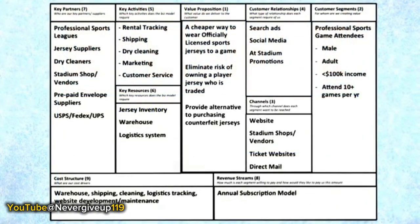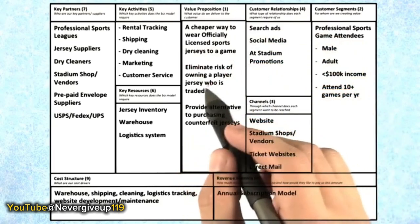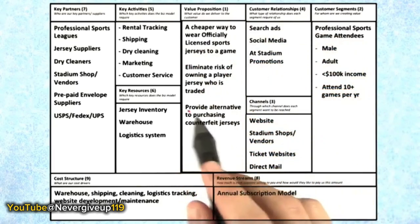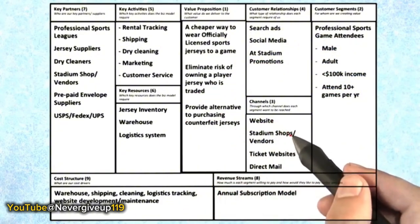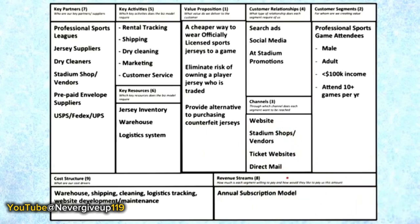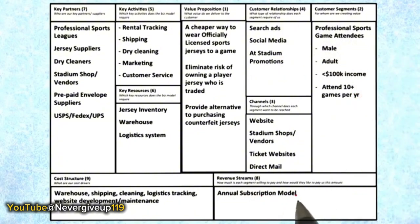On day one, these were their initial hypotheses coming into the class. They thought their customer segment was going to be professional sports game attendees — beginning with a series of hypotheses about their customer archetype. Their value proposition was to provide a cheaper way to officially license sports jerseys to a game, eliminate the risk of owning a traded player's jersey, and provide alternatives to counterfeit jerseys. Their sales channel was going to be websites, stadium shops, ticket websites, or direct mail. Demand creation was through search ads, social media, and stadium promotions. Their revenue stream was going to be through an annual subscription model.